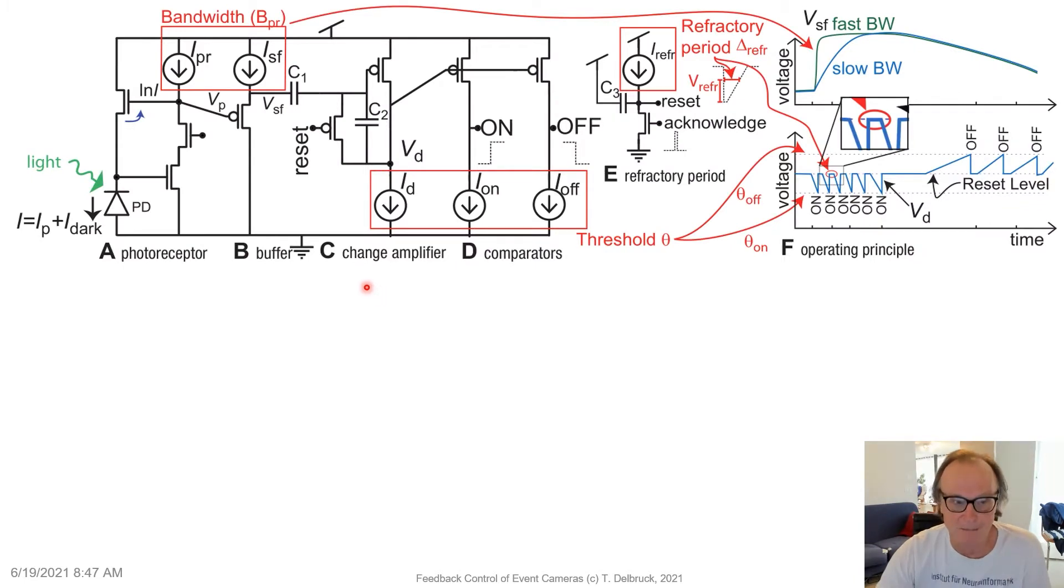So it's fair to say that many computer vision users of DVS event cameras don't know how the pixels really work very well because they're not circuit designers. But circuit designers like us understand that when you change the bias currents on the photoreceptor or the source follower buffer that follows, that controls the bandwidth of the pixel, the temporal bandwidth of the pixel.